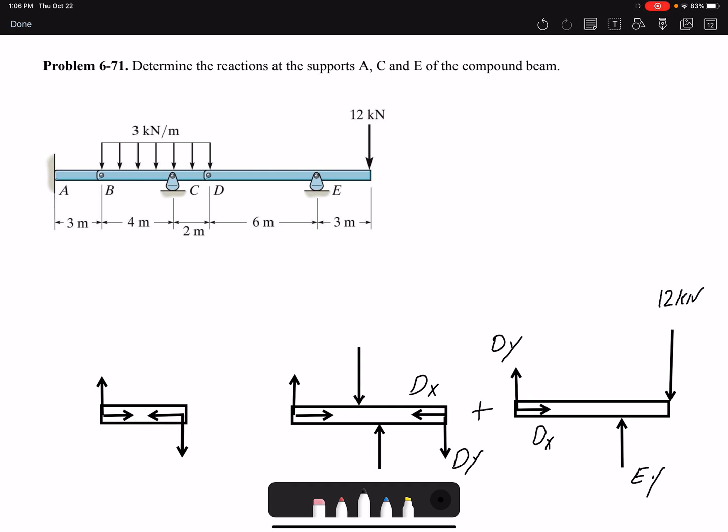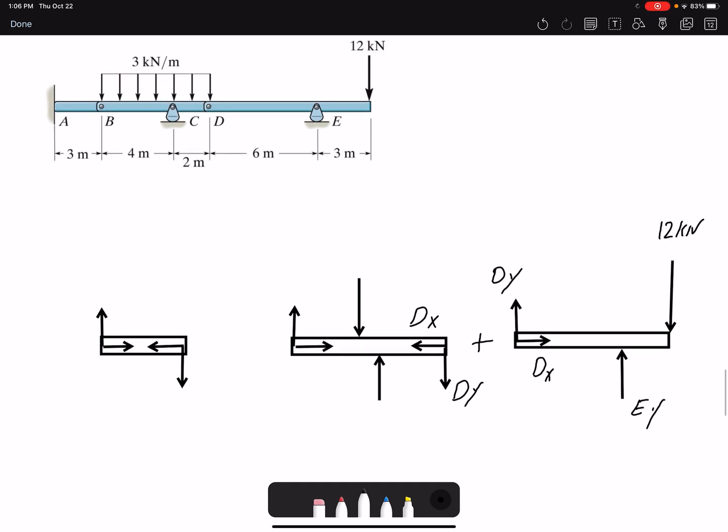If I add these two beams together, then these internal loads would go away. Then I have CY. I have my resultant force here, FR. So the magnitude is 3, the length is 6. It's uniform, so I have 18 kN would be the resultant force.